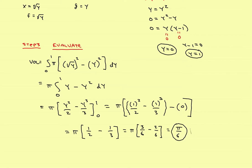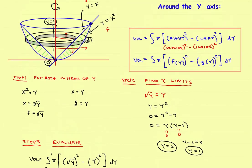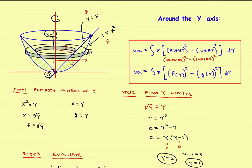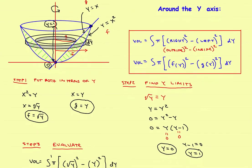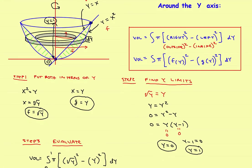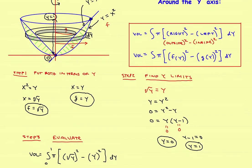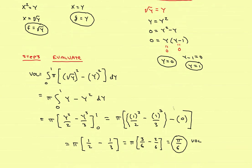So pi over six is the volume when you roll that region around the y-axis. To recap the steps: first, put both functions in terms of y — f of y is the one on the right or outside, g of y is the one on the left or inside. Second, find the limits of integration by setting the two y functions equal to each other and solving for y — in this case zero to one. Third, evaluate the integral to get the enclosed volume. That's an example of the washer method going around the y-axis.